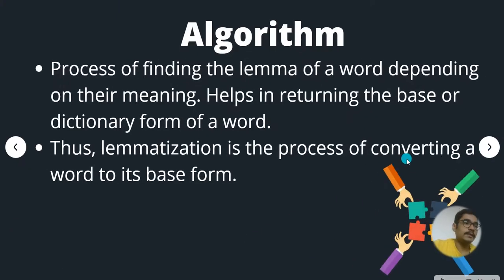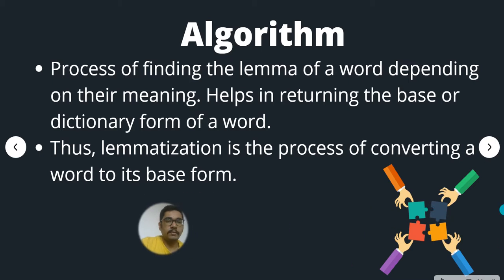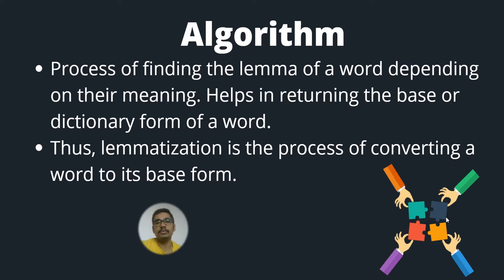Lemmatization is the process of finding the lemma of a word depending on its meaning. It helps in returning the base or dictionary form of a word. There's a small diagram on this side — people are joining jigsaw puzzle pieces together. When all four people join the pieces it makes sense, but if one part is missing it doesn't convey any sense. That's where the lemmatization algorithm comes into picture.